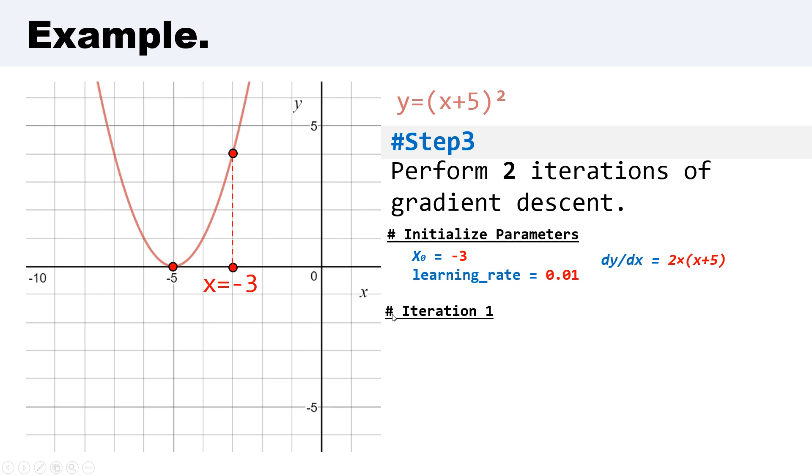Let's start with the first iteration. We have x₁ equal to x₀ minus learning rate multiplied by gradient. Put the values in correct places. We have a function like this.